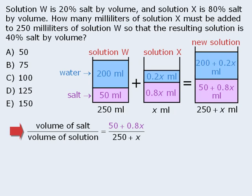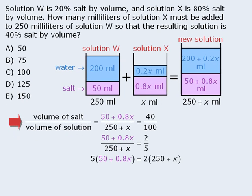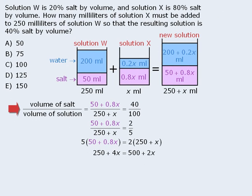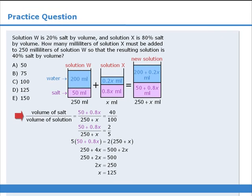We are told that this concentration must equal 40%, which we can write as 40 over 100. At this point, we have an equation we can solve for x. First, let's simplify the right-hand side to be 2 fifths. From here, we can cross multiply, and then expand both sides. Now we can subtract 2x from both sides, then subtract 250 from both sides, and then divide both sides by 2 to get x equals 125. Since x equals the number of milliliters of solution X, our answer must be D.